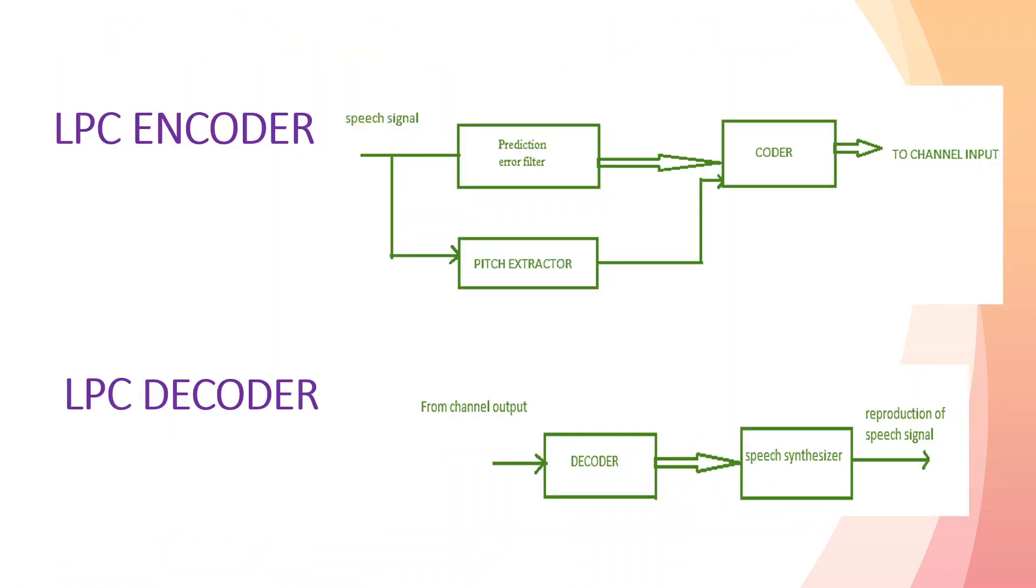Coming to the LPC encoder: it has the input speech signal. It will take the input speech and from the speech, two parameters will be extracted - prediction error filter coefficients as well as pitch period. These two features will be given to a coder, which will convert the given input into digital bits and transmit through the channel.